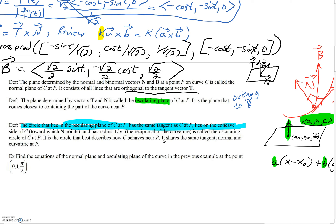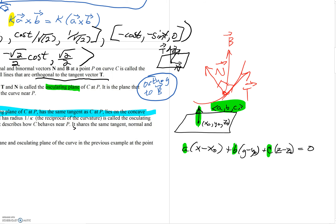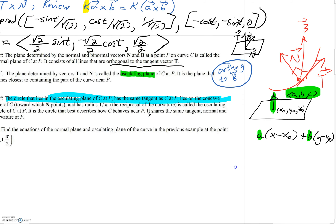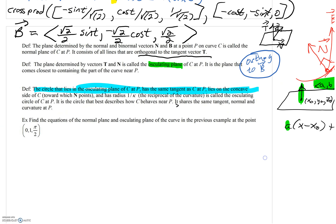Likewise, there's also the osculating plane. The osculating plane has vectors T and N resting inside it, so the binormal vector B is orthogonal — B provides your a, b, c. The osculating plane is the plane that comes closest to the curve near point P. Just as you can have an osculating plane, you can have an osculating circle — the circle that lies in the osculating plane — which we'll cover in the next video.